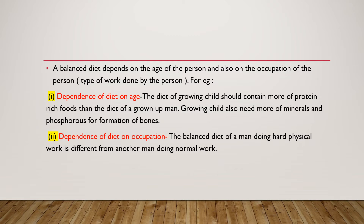Next, the dependence of diet on occupation. The balanced diet of a man doing hard physical work is different from a man doing normal work. A person doing hard physical work — like a laborer or carpenter — needs more carbohydrate-rich food than a person doing normal work, like sitting in an office.